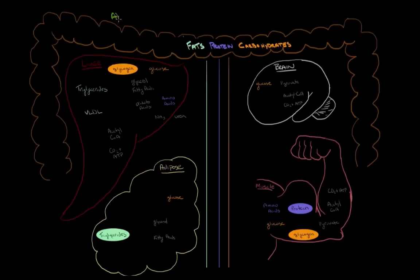The absorptive state is a series of metabolic reactions that your body does when food is in plenty. You have food in your intestines, and you're absorbing that food, so you don't need to utilize all this energy. Instead, you want to store it so you can use it later.